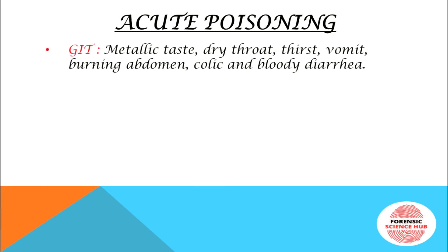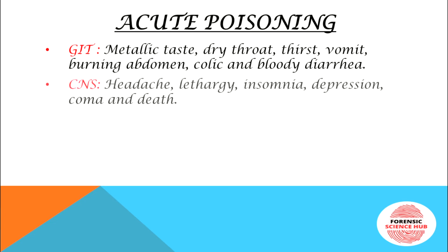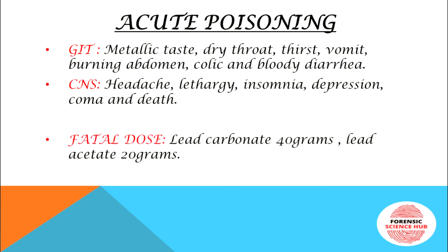In acute poisoning, GI tract symptoms include metallic taste, dry throat, thirst, vomiting, burning, abdominal colic, and bloody diarrhea. Central nervous system symptoms include headache, lethargy, insomnia, depression, coma, and death. The fatal dose for acute poisoning is 40 grams for lead carbonate and 20 grams for lead acetate.